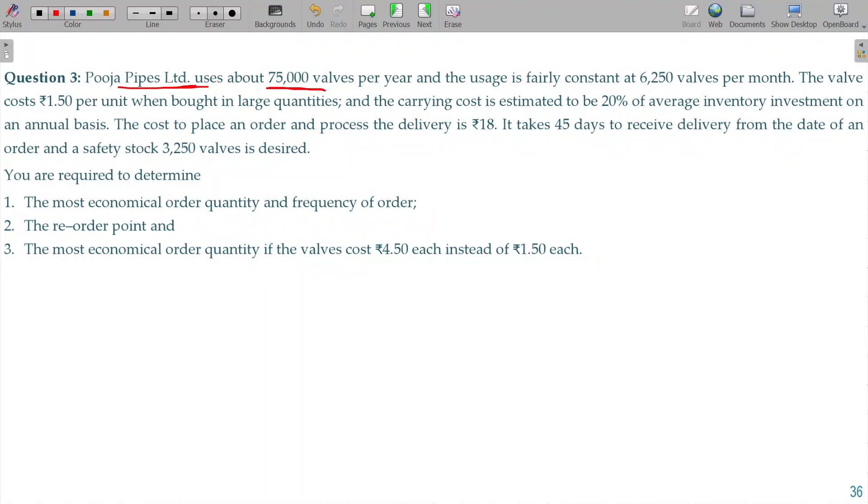Pooja Pipes Limited uses about 75,000 valves per year and the usage is fairly constant at 6,250 valves per month. The yearly requirement in raw material - the valve costs rupees 1.50 per unit when bought in large quantities.